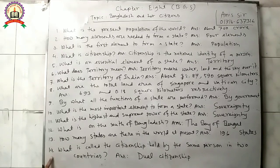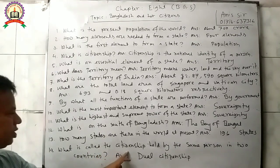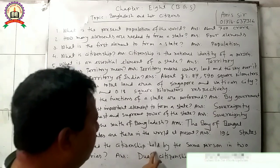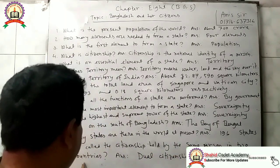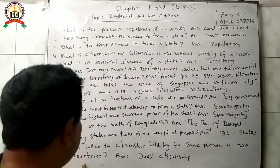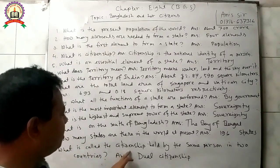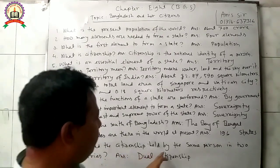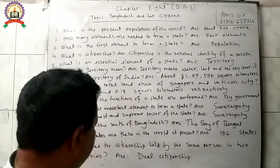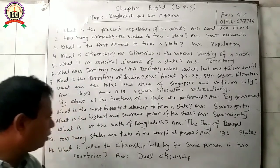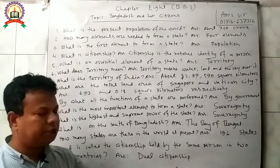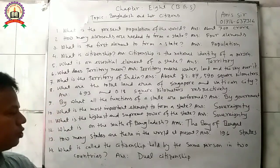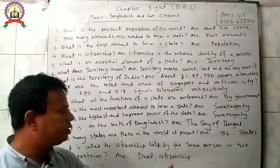Question 14: What is the citizenship held by the same person in two countries called? Answer: This citizenship is called dual citizenship.